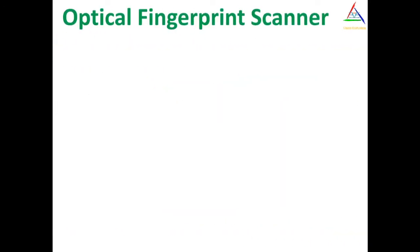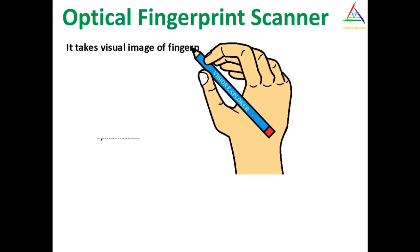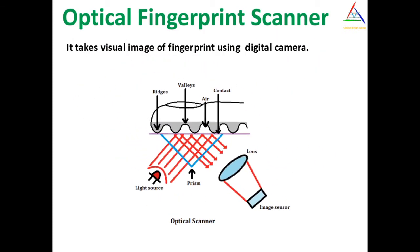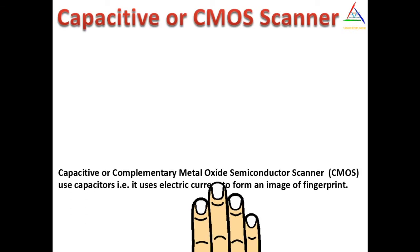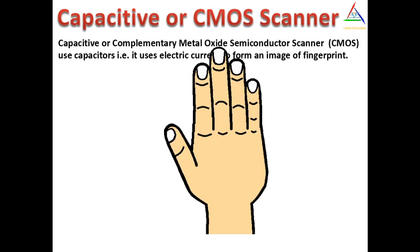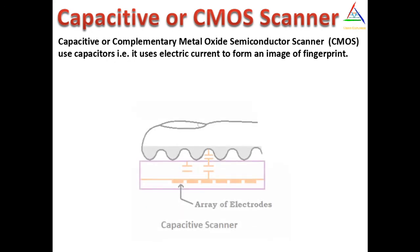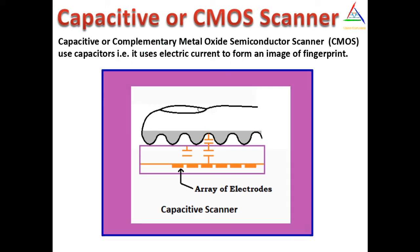First is the optical scanner. It takes a visual image of a fingerprint using a digital camera. The second is the capacitive or CMOS scanner — CMOS stands for complementary metal oxide semiconductor. It uses capacitors, meaning it uses electrical current to form an image of the fingerprint.